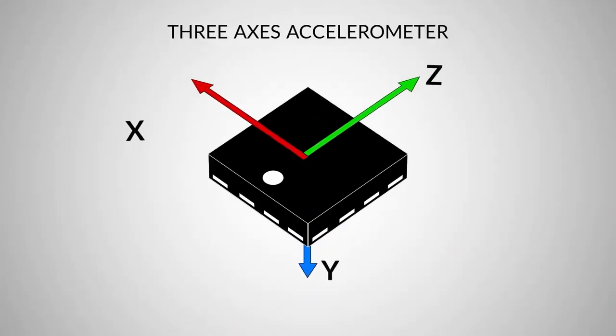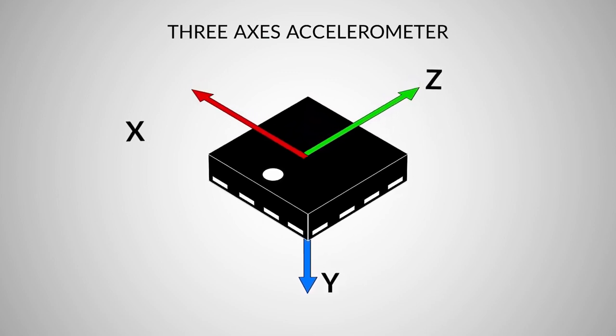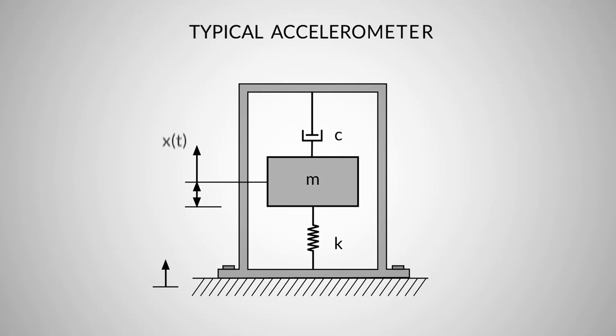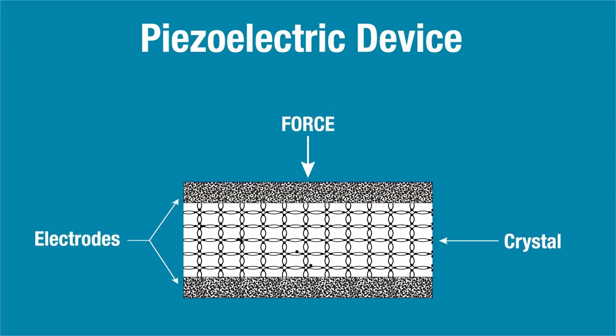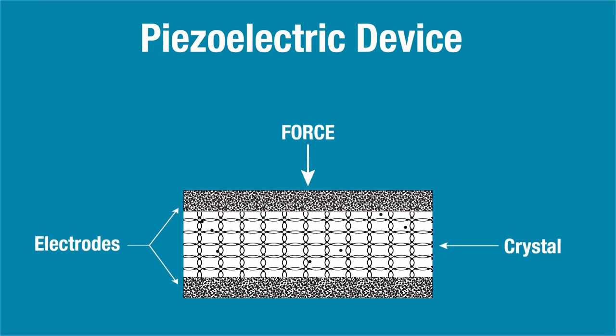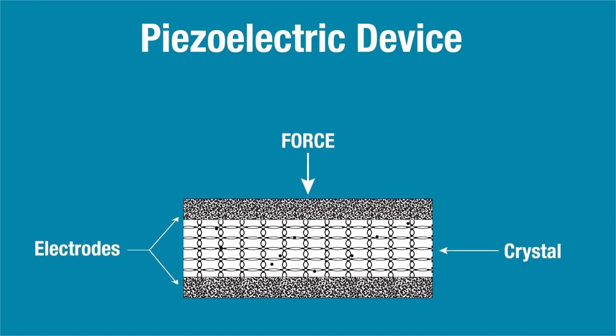An accelerometer is a device that measures the vibration or acceleration of motion of a structure. The force caused by vibration or change in motion causes the mass to squeeze the piezoelectric material, which produces an electrical charge that is proportional to the force exerted upon it.